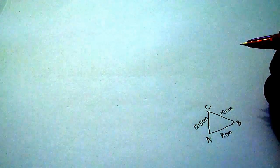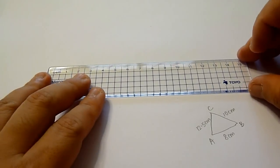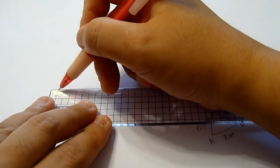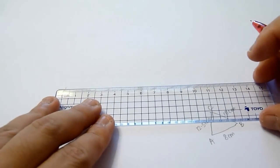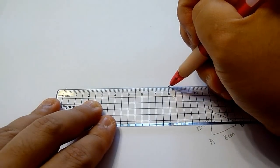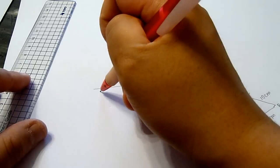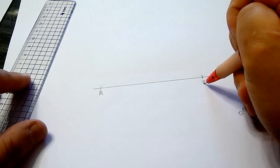Next, using a ruler, we draw the base, which is 8 cm. We will mark out the two points, A and B, on the line.